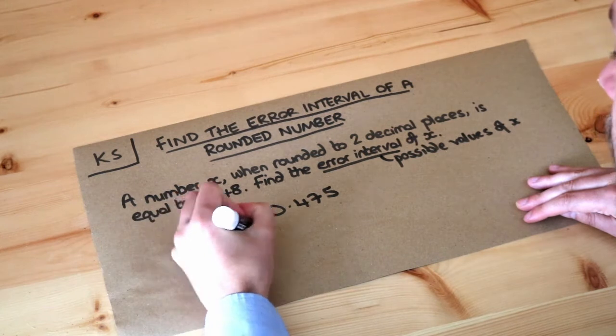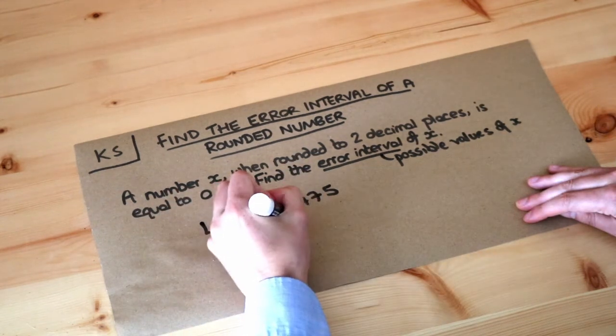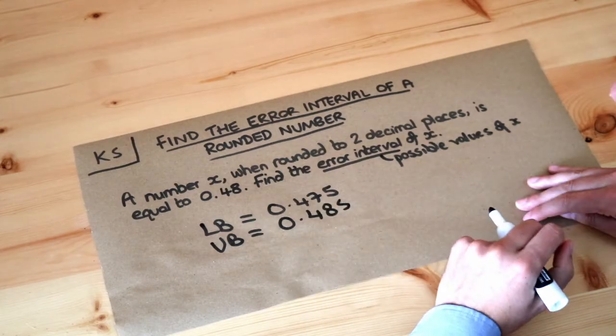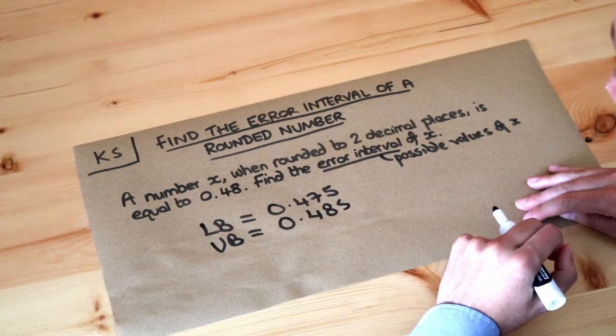And remember the upper bound, the little trick was you just shove a 5 on the end so it's 0.485. So that's the smallest value and the largest value that x could have been.